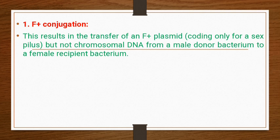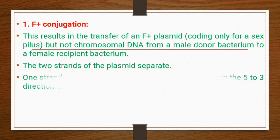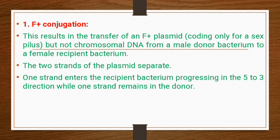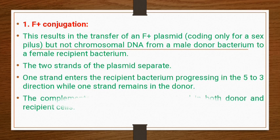In F+ conjugation, the result is the transfer of an F+ plasmid but not chromosomal DNA from a male donor bacterium to a female recipient bacterium. The two strands of the plasmid separate; one strand enters the recipient bacterium proceeding in the 5' to 3' direction, while one strand remains in the donor. Complementary strands are then synthesized in both donor and recipient cells.